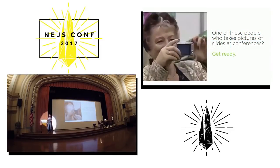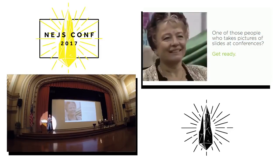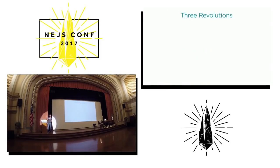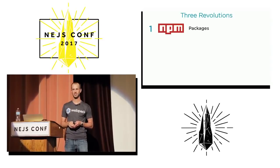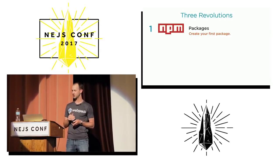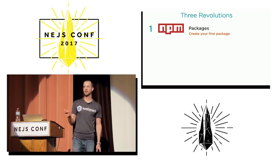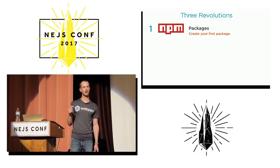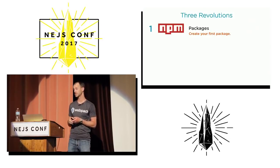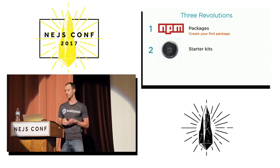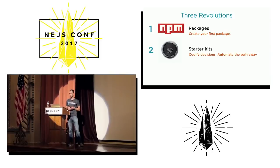That's precisely why I laid out the reusable revolution in the order I did. If you're someone who likes to take pictures of slides at conferences, here's your big chance. First: NPM packages — the reusable revolution of packages. My call to you: create your first package. About 60% of the room has not yet created an NPM package, so that's a big first step.